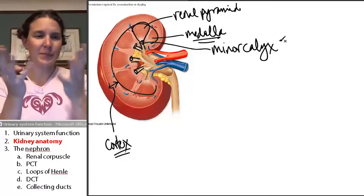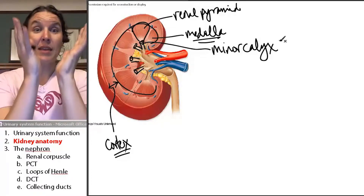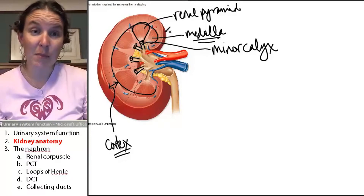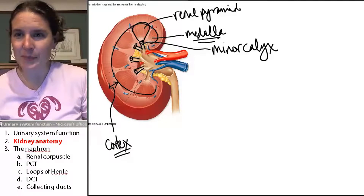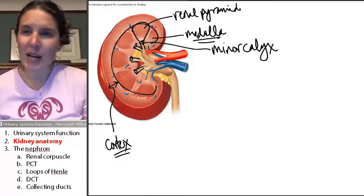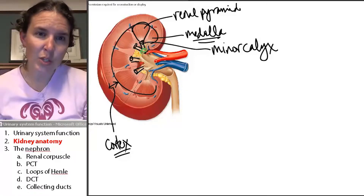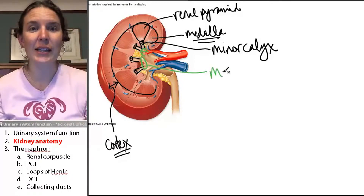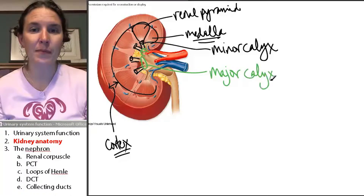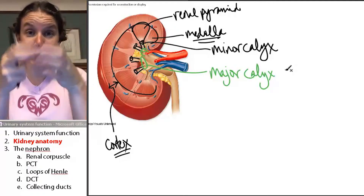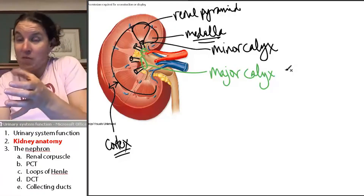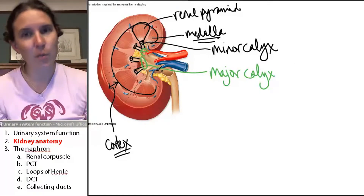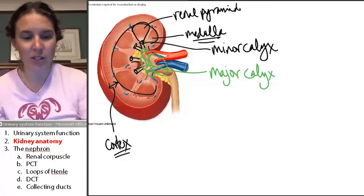So the pyramids are doing filtering — they're filtering the blood and hopefully reabsorbing the good stuff. Whatever's left over becomes urine and dumps into the minor calyx. Minor calyces (that's plural for calyx) dump into what you'd call a major calyx. A couple of minor calyces dump into a major calyx. The major calyces then dump into the renal pelvis.